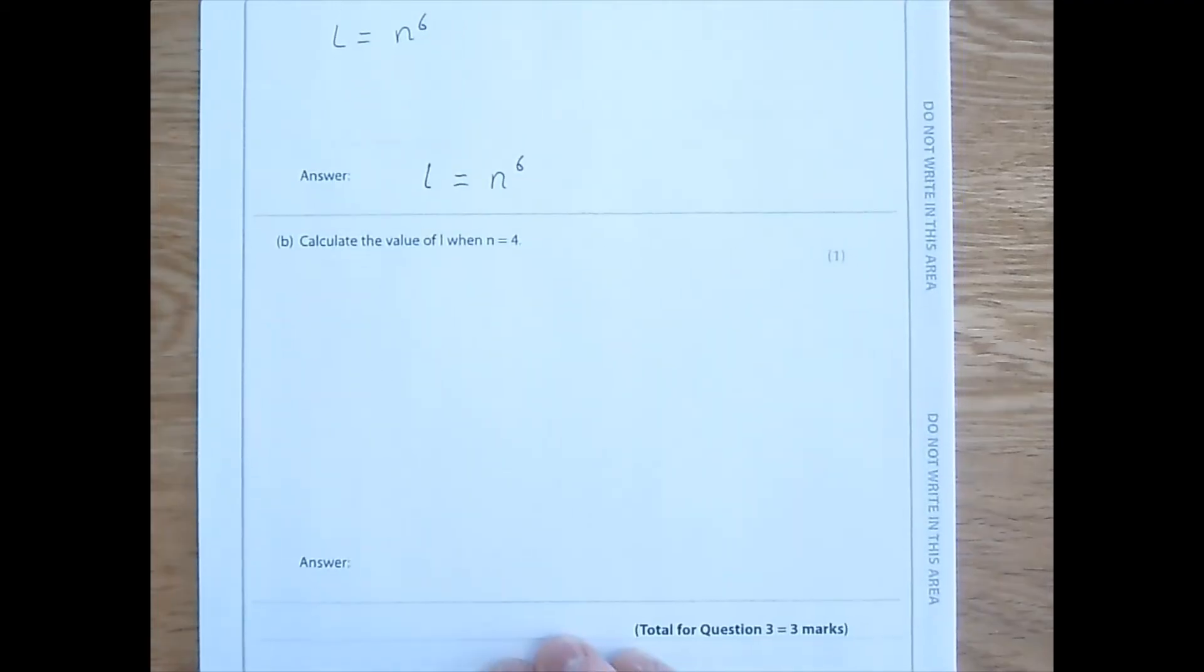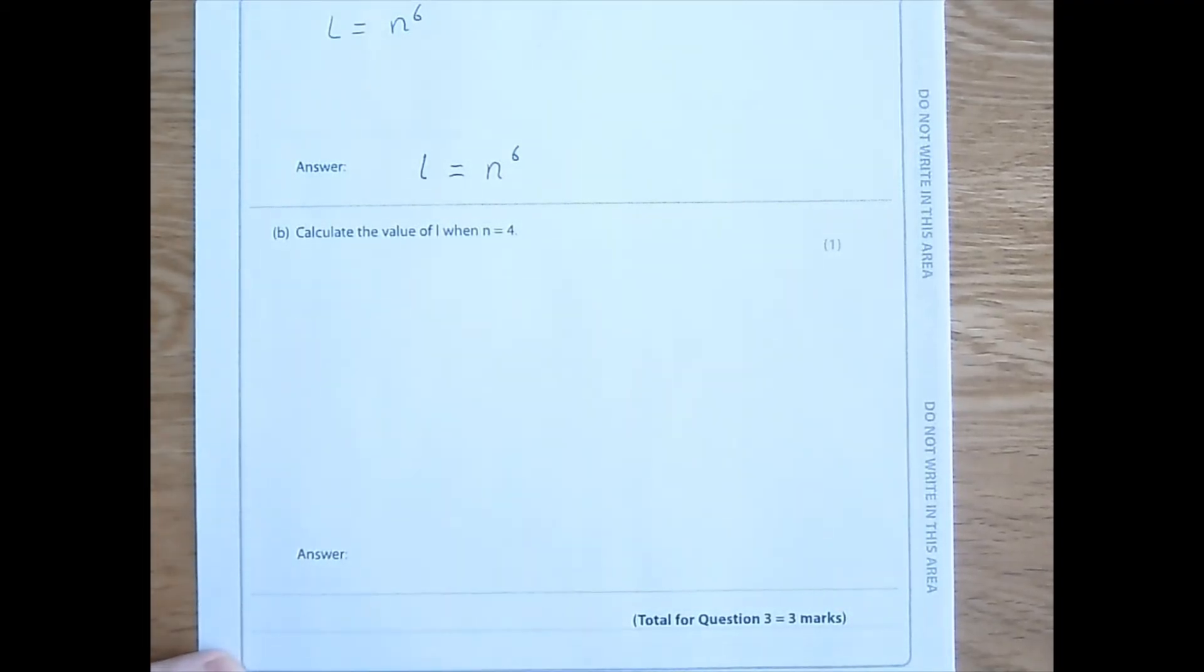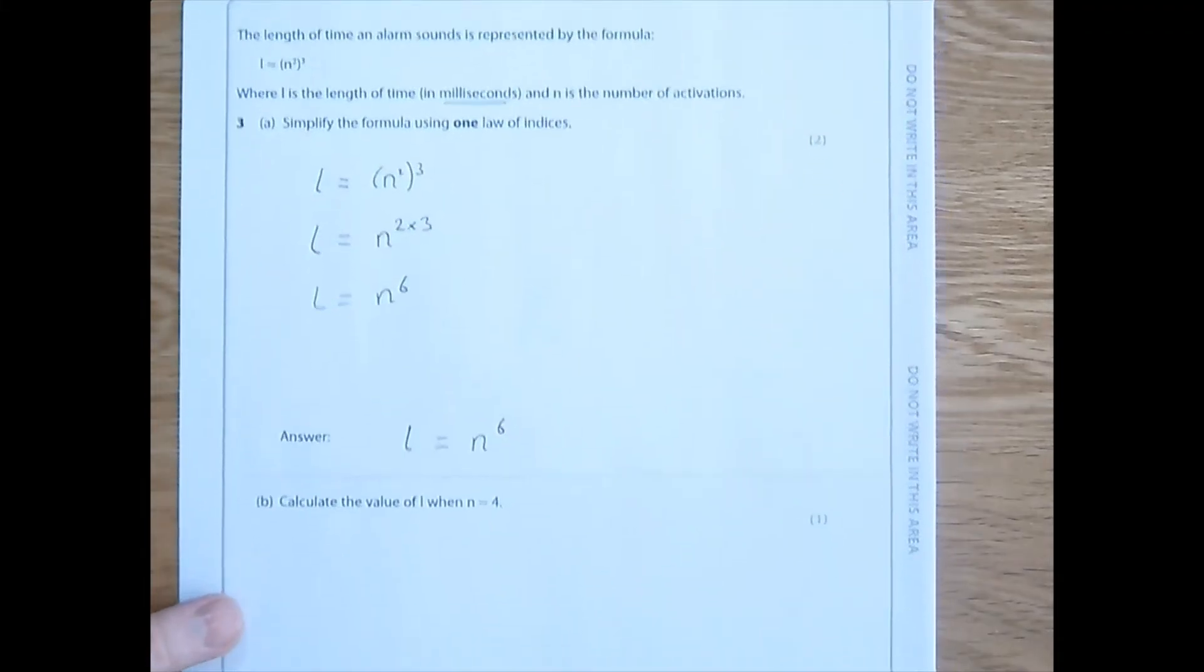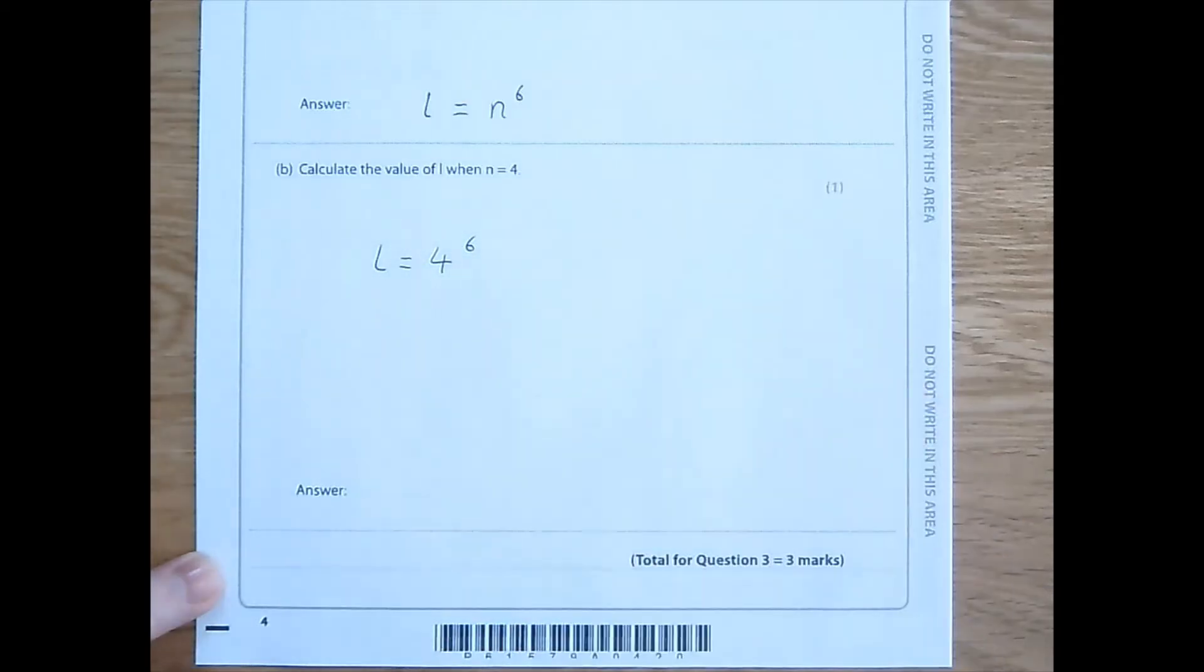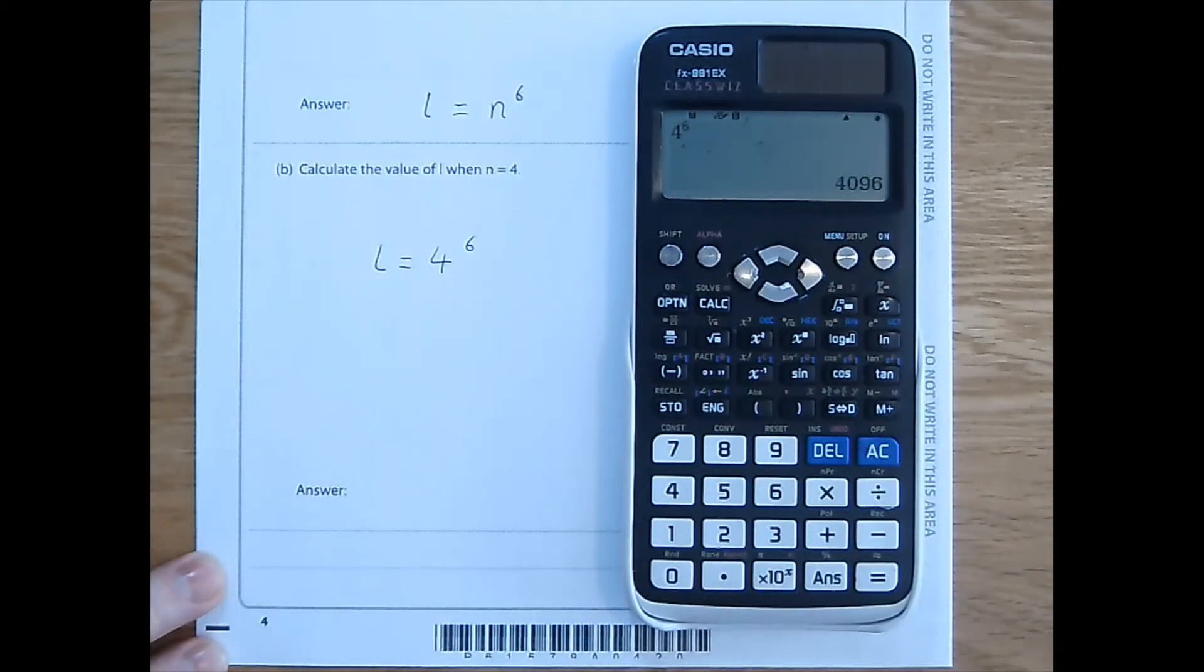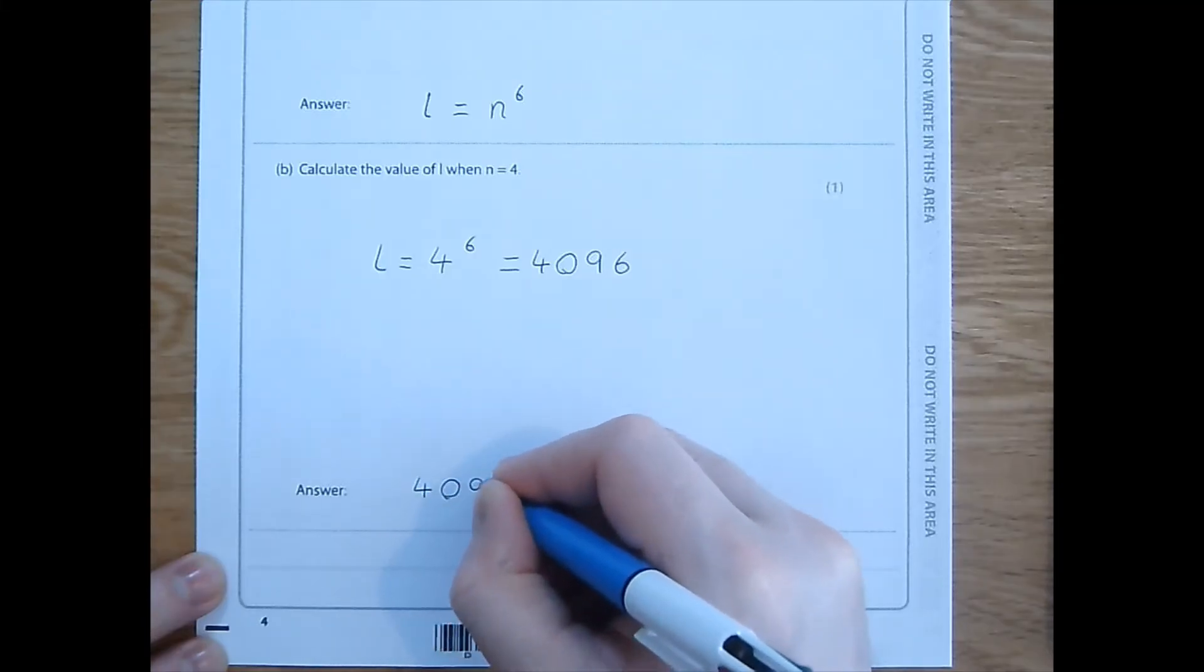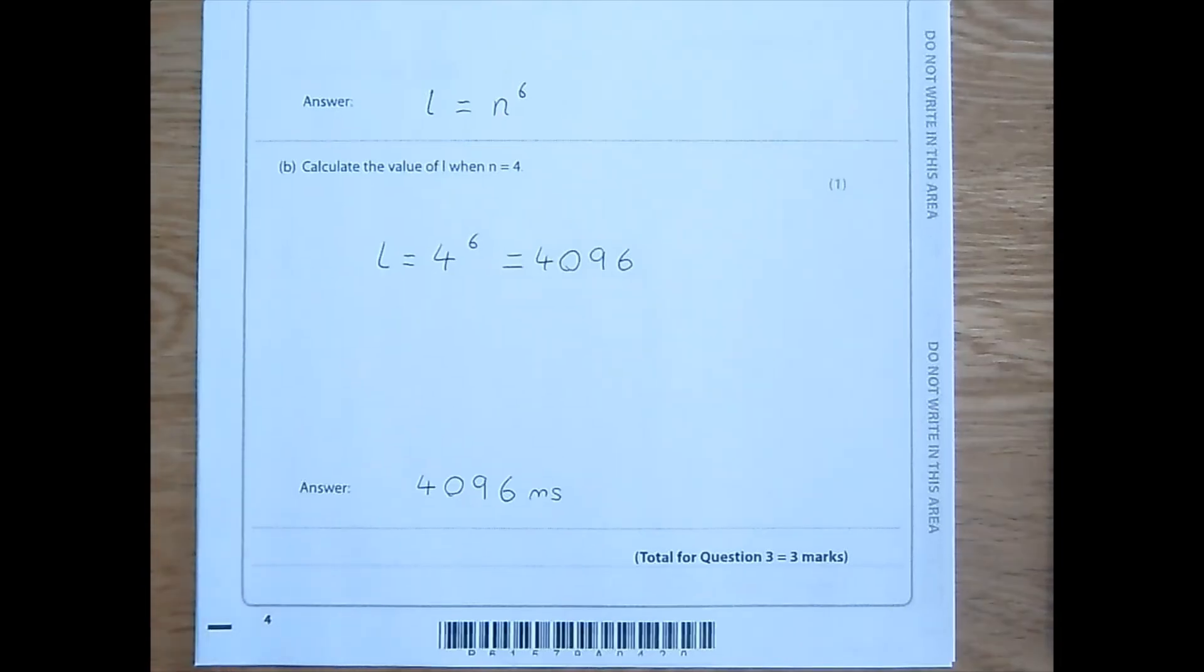Okay, for the next part, we are asked to calculate the value of L when N equals 4. In order to do this, there's two things that I need to do. The first thing is N is 4. I need to substitute this into this equation here. And the next thing is to remember the units that we're using. That was why I underlined them, as a reminder. So, L equals 4 to the power 6. 4 to the power 6. 4,096. There's no need to round that. But we do need to include units. Milliseconds. And that is question 3.